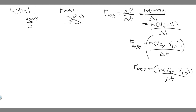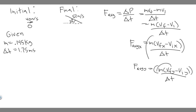Here's what we're given: the mass of the ball is 0.145 kilograms, and the contact time is 1.75 milliseconds. We need that in seconds, so divide by 1000: 1.75 / 1000 = 0.00175 seconds. Now we have m and Δt, and just need the velocity components.